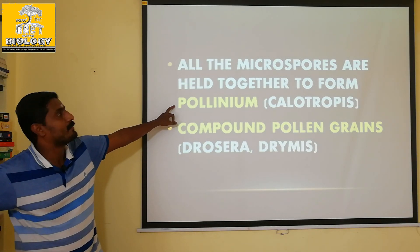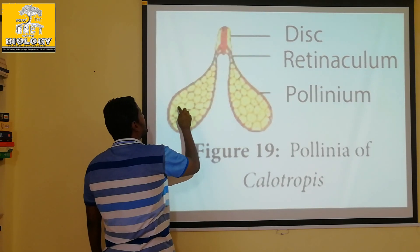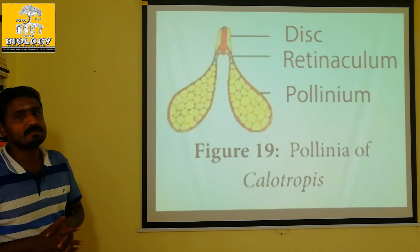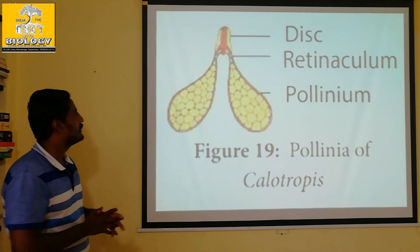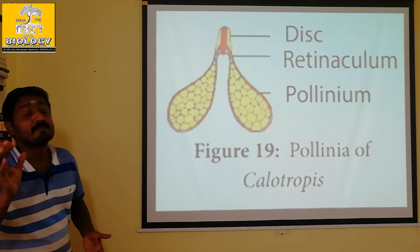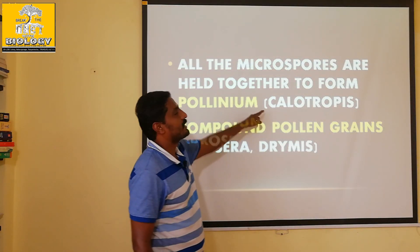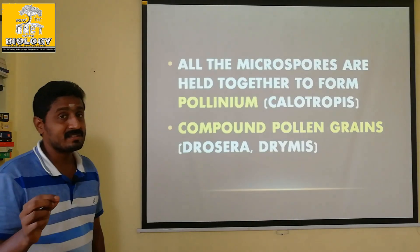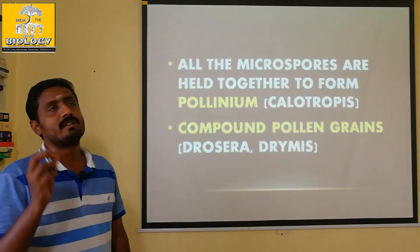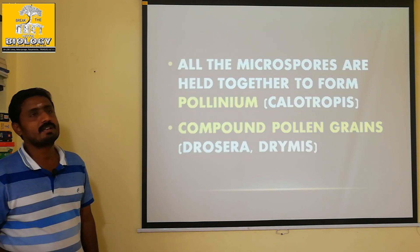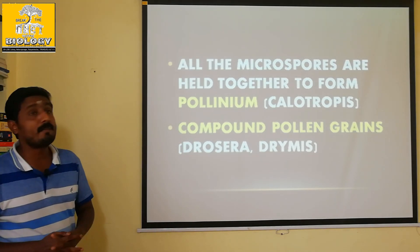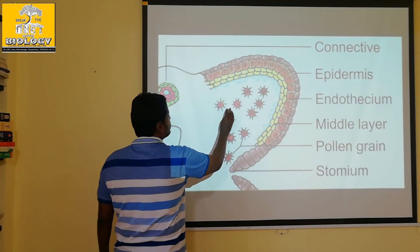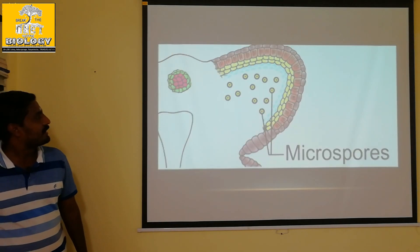The structure is pollinium. This is what is the structure of pollinium — pollinium is being created. The anther wall is created, and pollinium is created. What is the plant called pollinium? Calotropis. There is a flower with a pollinium — compound pollen grains.